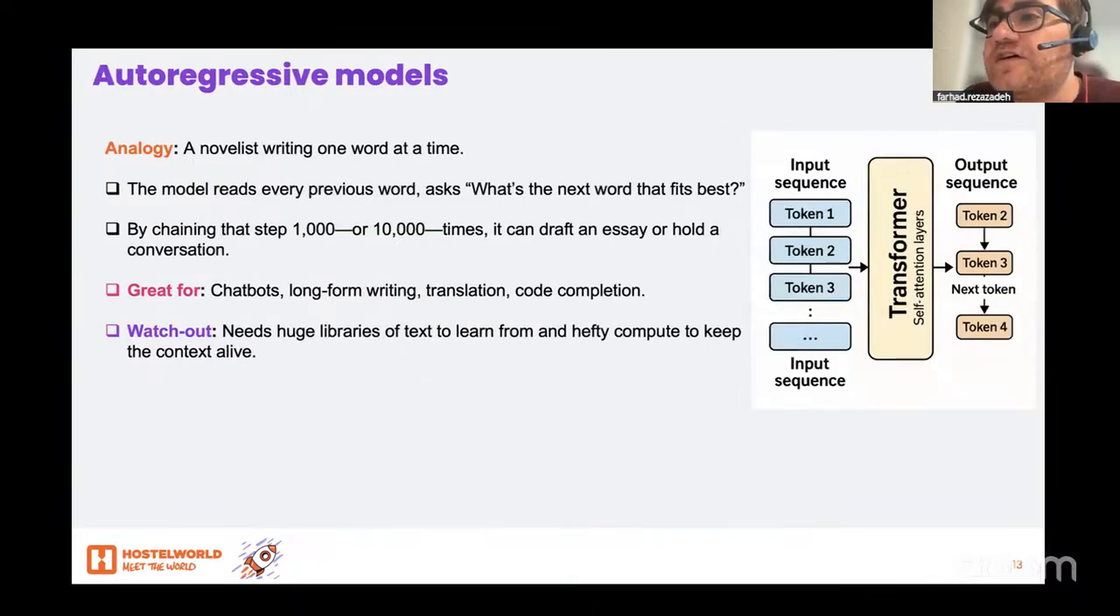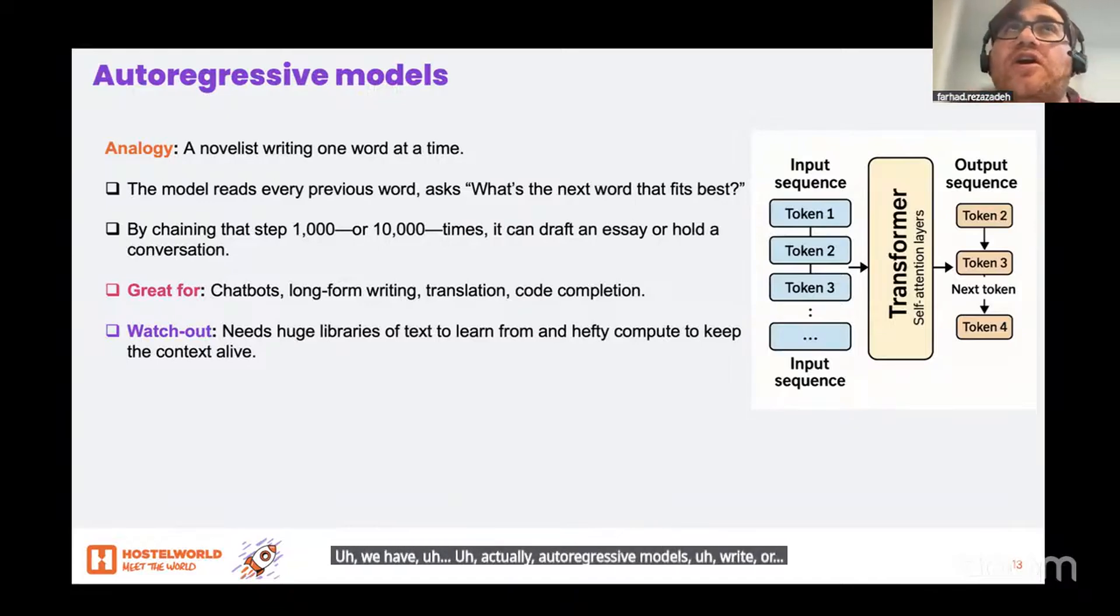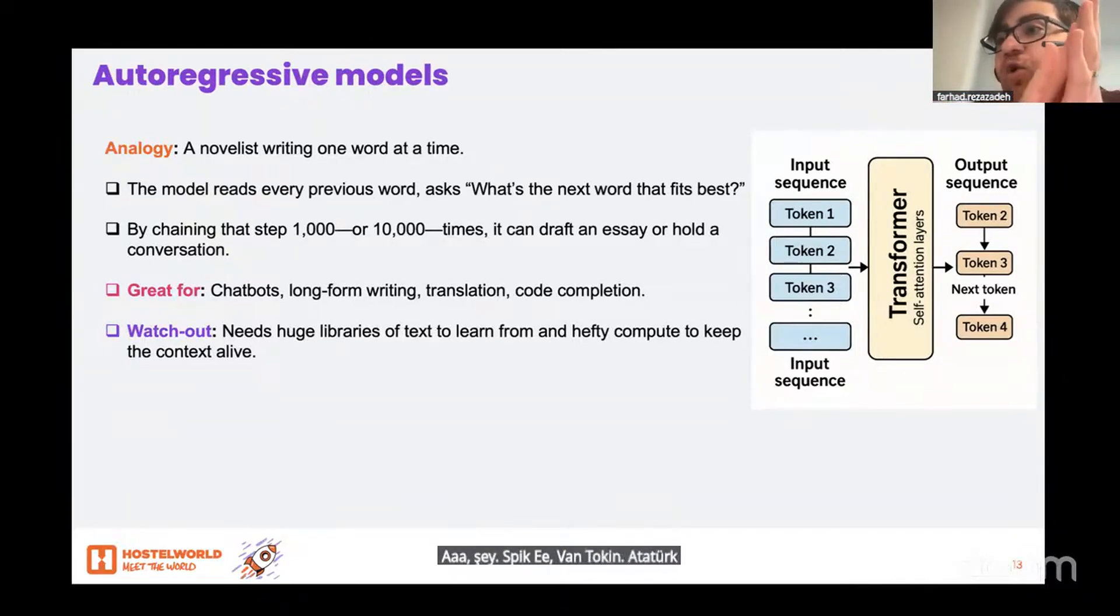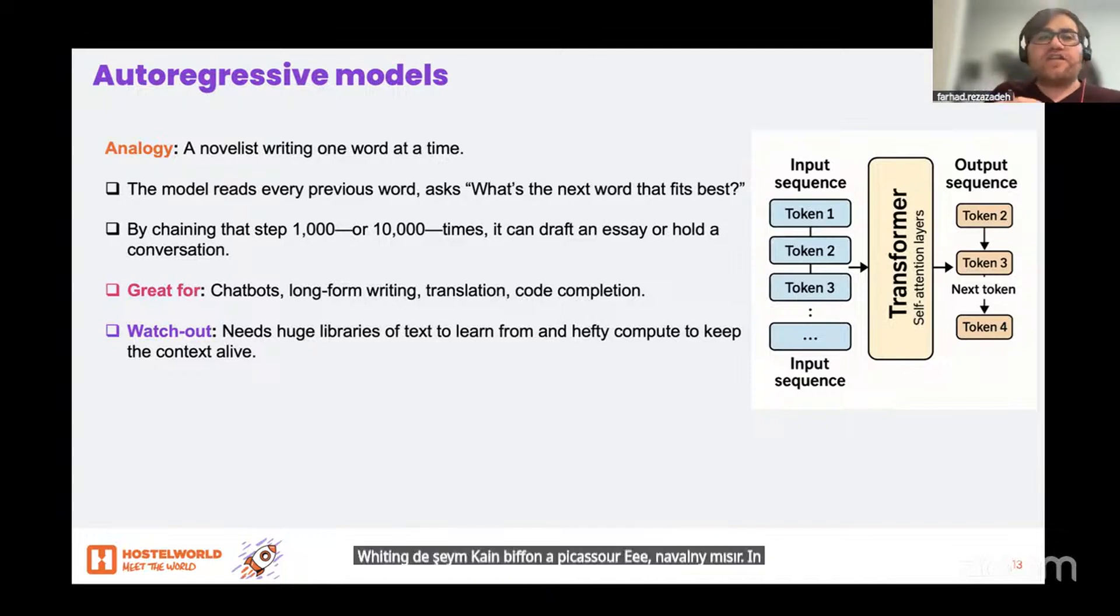We have actually autoregressive models. They write or speak one token at a time, always picking based on everything that came before. Picture a novelist who writes one word, then reads back the whole sentence to decide the next word, and repeats.